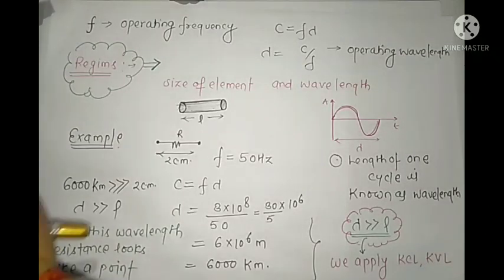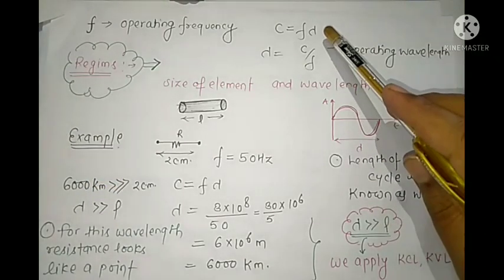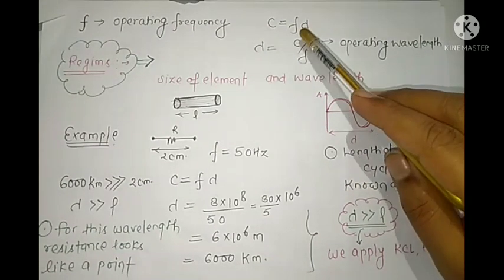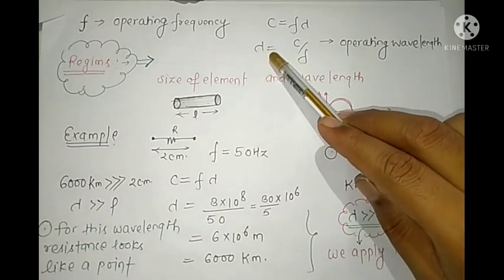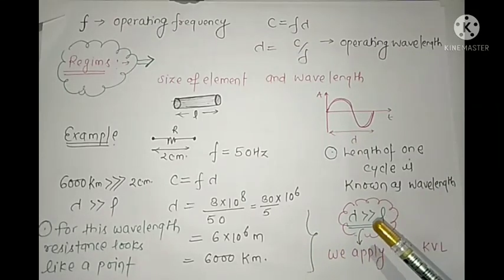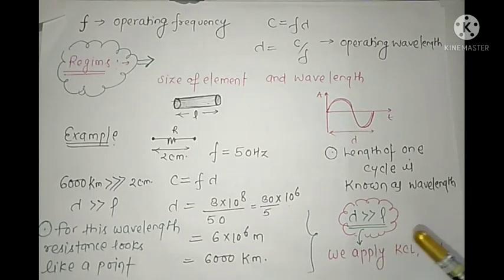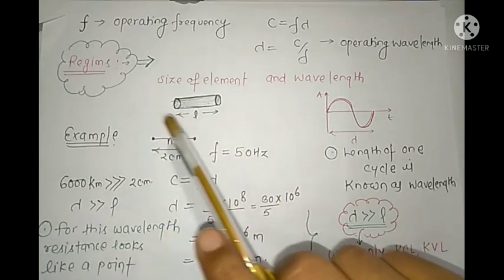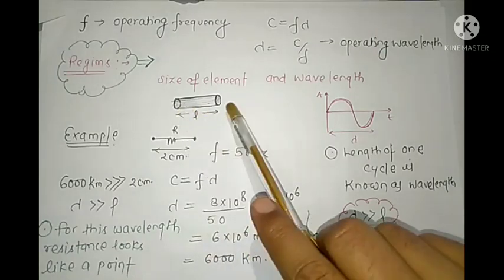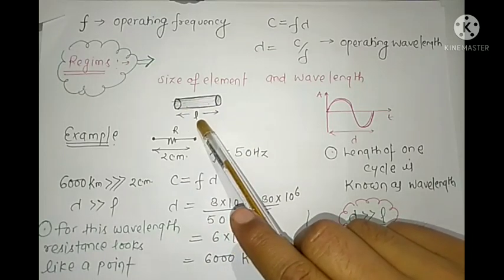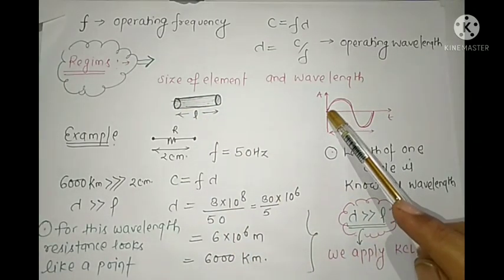Lambda is the operating wavelength. The relation between frequency and lambda is given by c equals frequency times lambda. If you know the frequency, you can calculate the operating wavelength. There are three regimes you should know before studying transmission line theory, microwave theory, or antenna theory. The first regime involves comparing the length L of the conductor with the wavelength lambda.